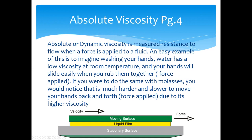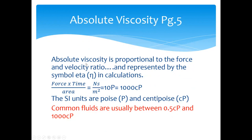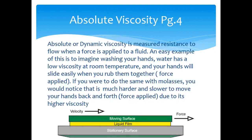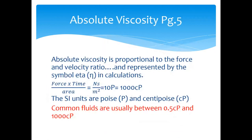Absolute viscosity is proportional to the force and velocity ratio, represented by the symbol eta (η) in calculations. We have force and time over area representing what's going on between the plates — the amount of force and time related to velocity and the surface area. That unit comes out as Newtons per meter squared, which converts into common units such as the poise or centipoise. Most common fluids are generally between 0.5 and 1000 centipoise, with centipoise being the most frequently used unit.